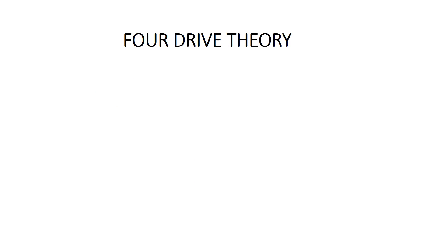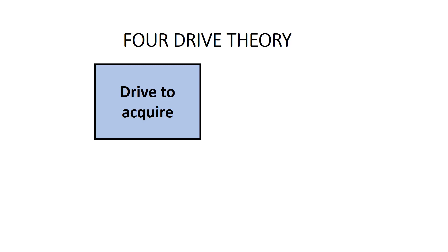In this video we'll be looking at our third theory of motivation, which is Lawrence and Nohria's four drive theory. According to this theory, employees are motivated by four drives or desires. Each of these drives is included in your vocabulary sheets, so make sure you include a definition of each. The first drive is the drive to acquire — this is an employee's drive or desire to obtain things such as higher pay, promotion, praise, status, and power. A strategy to satisfy this drive is to provide rewards such as bonuses and promotions which are clearly linked to performance.